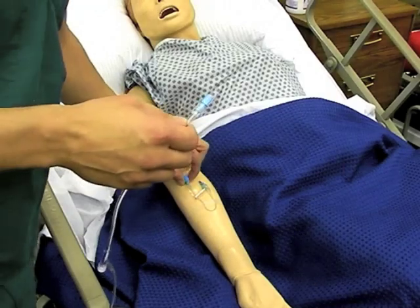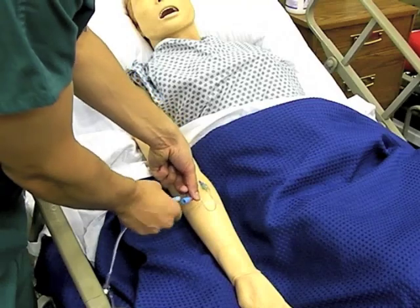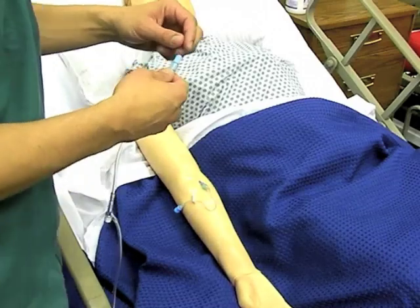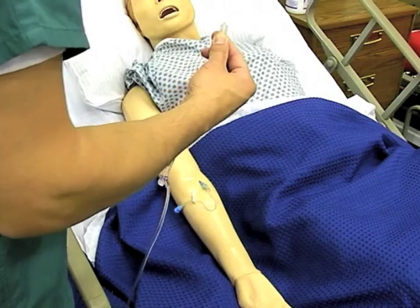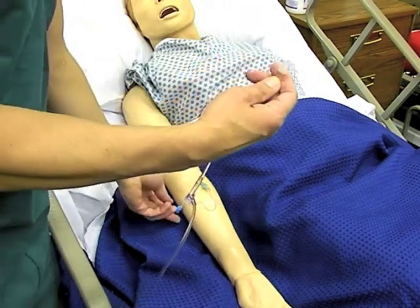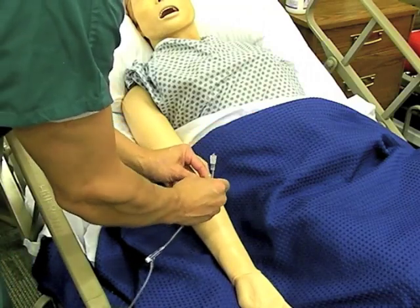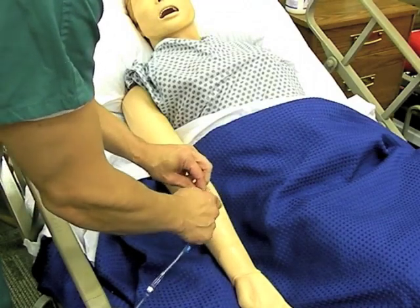It's time to connect the administration set to the patient. You will need to remove the sterile caps that are on the end of the administration set as well as on the IV extension line, which has been connected to the patient's IV catheter. The type of connection we use here is called a lure lock connection. Like with most syringes and needles, the two connectors screw together. Be sure to maintain sterility.